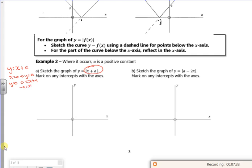Because it's x plus a, it's got a gradient of 1. So I'm looking at something which looks like that. So that there is a, that there is minus a. So that's y equals x plus a, where a is positive. So then I need to reflect back up all that bit. That's the modulus of x plus a.